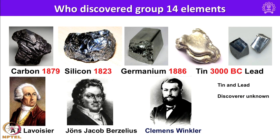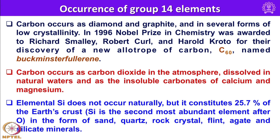Carbon occurs as diamond and graphite and in several forms of low crystallinity. In 1996, the Nobel Prize in Chemistry was awarded to three eminent scientists — Richard Smalley, Robert Curl, and Harold Kroto — for their discovery of a new allotrope of carbon, C60, called fullerene, named after Buckminster Fuller. Carbon also occurs as carbon dioxide in the atmosphere, dissolved in natural waters, and as insoluble carbonates of calcium and magnesium in the earth's crust.